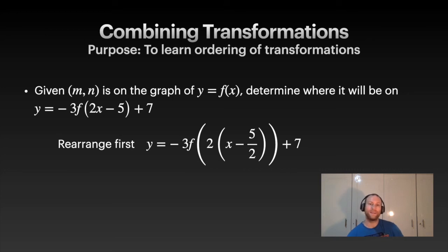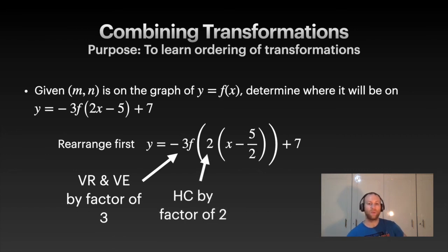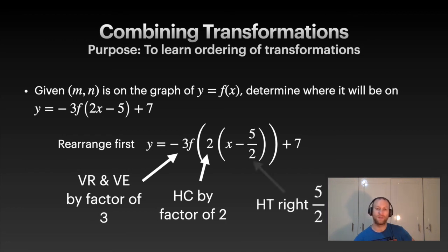We can look at each of the types of transformations we've got. Out here, we've got a vertical reflection and a vertical expansion. Because of the negative, we reflect. Because the number is bigger than 1, we expand. Here, we're compressing, because remember, x is the opposite. Then, a horizontal translation to the right and a vertical translation up.